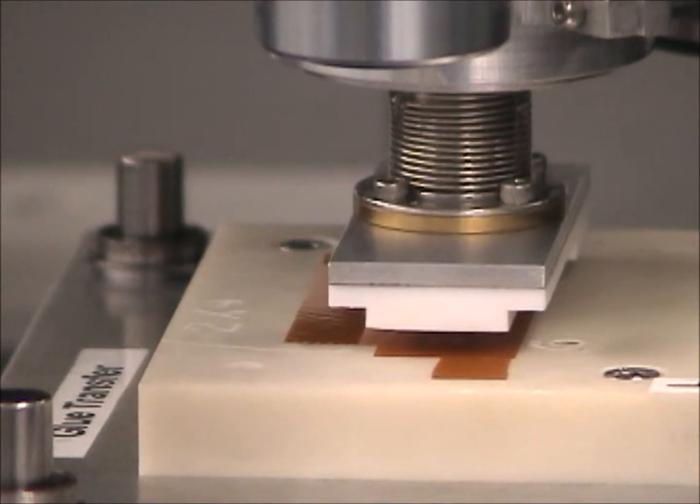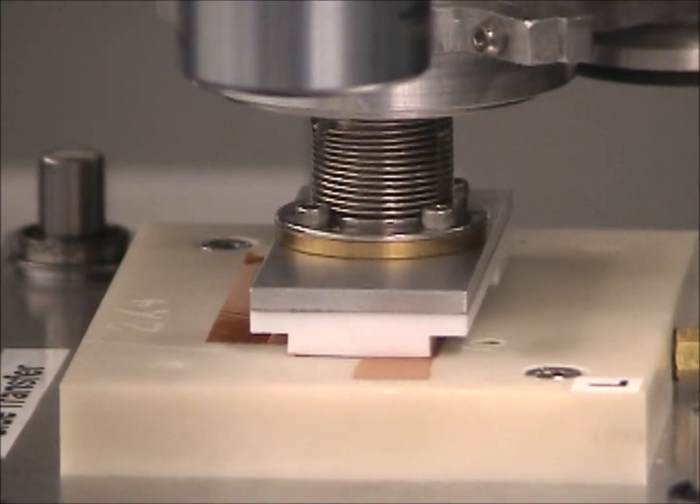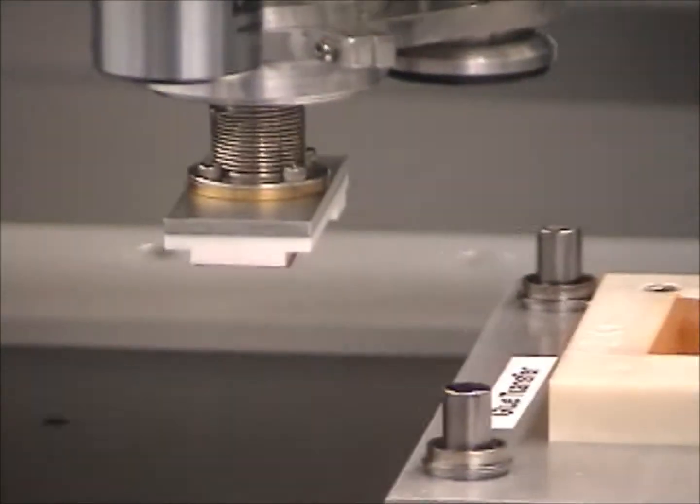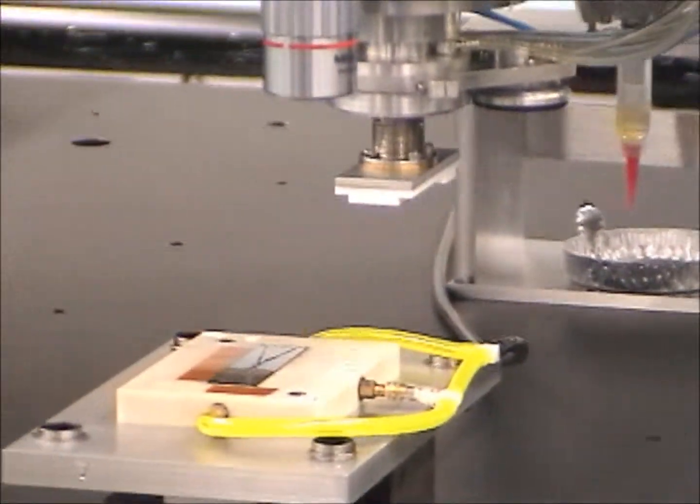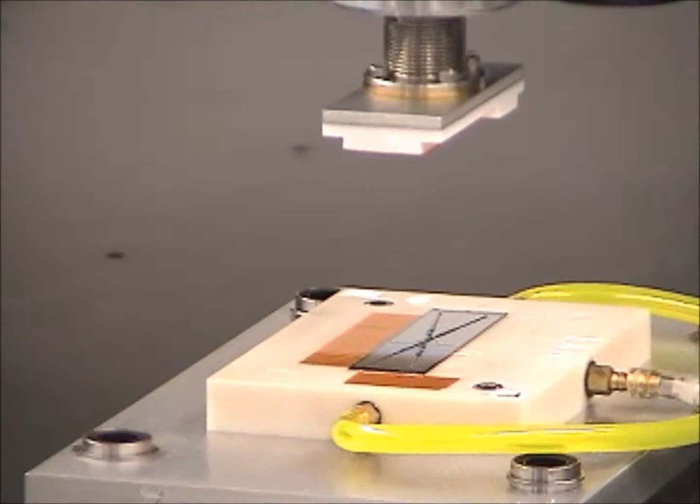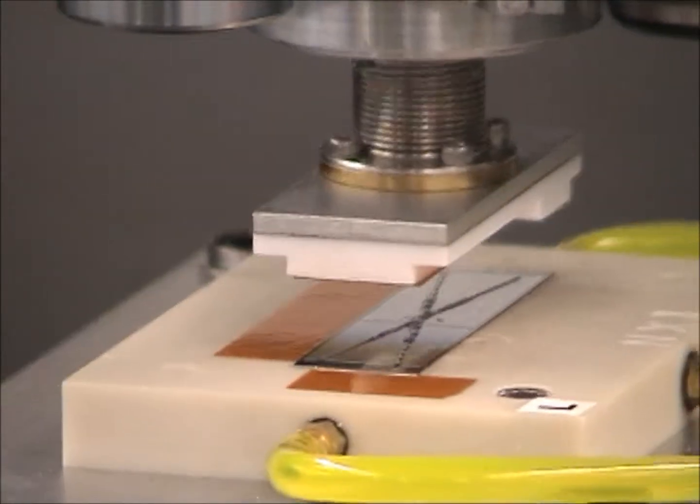It comes into contact with the HDI. The vacuum releases on the base plate, is turned on by the vacuum pickup tool to pick up the HDI, translates and rotates to align the HDI to the sensor, and then places the HDI on the sensor.